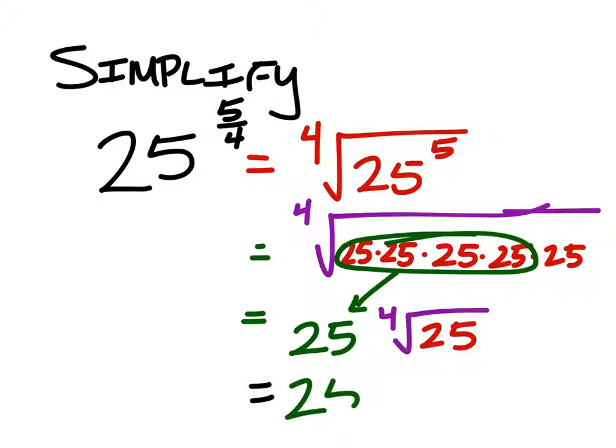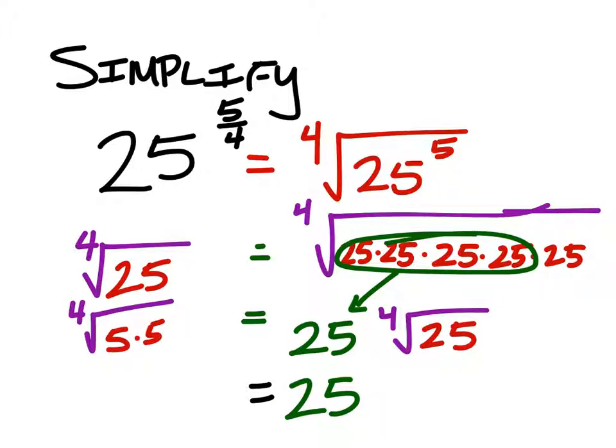So I've still got that green 25, but let's look at the fourth root of 25. We'll do it over here. The fourth root of 25. Well, I can change 25 into its factors, which would be 5 times 5, right? So that would be the fourth root of 5 times 5, which is the same as the fourth root of 5 to the power of 2.